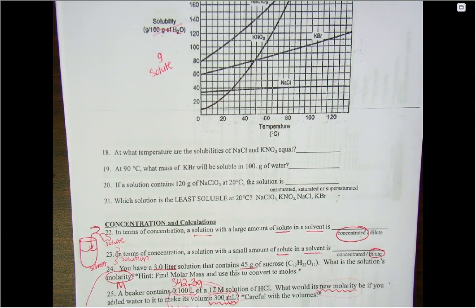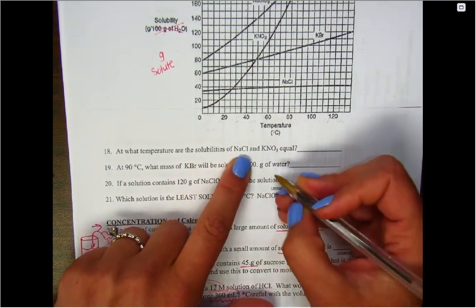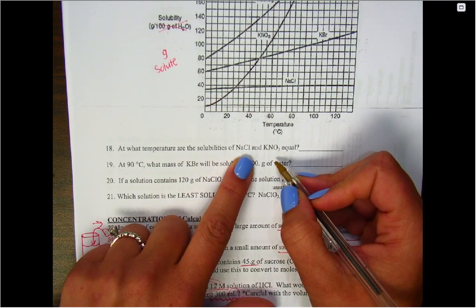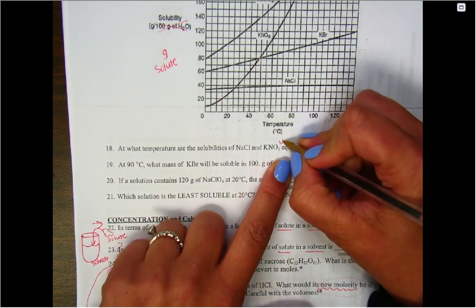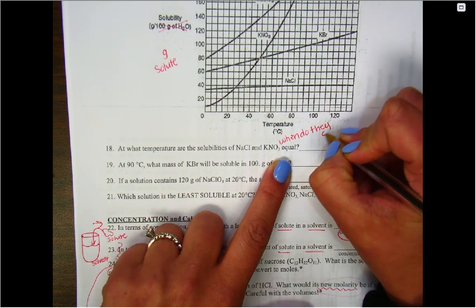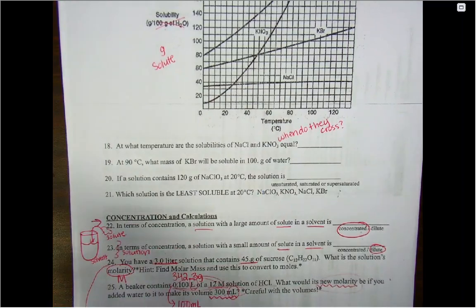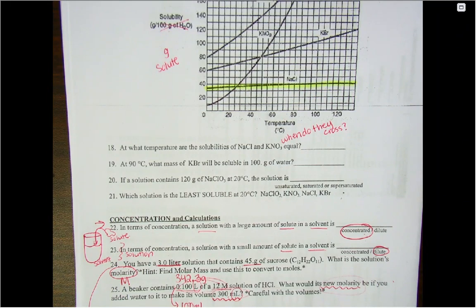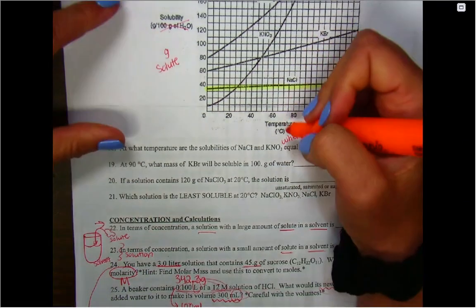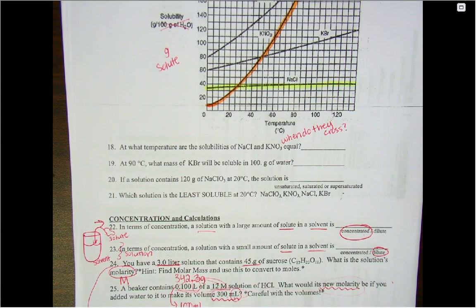So at what temperature will the solubilities of NaCl and KNO3 be equal? What I'm asking you here is when do they cross each other. So we're going to find NaCl. Looking at my little graph, I see that NaCl kind of maintains its solubility pretty consistently, and I'm going to look at KNO3, that one kind of curves up like this.